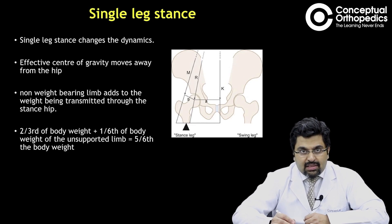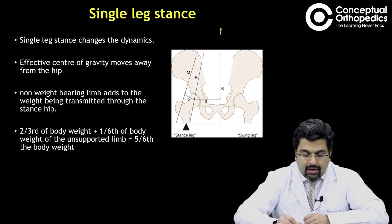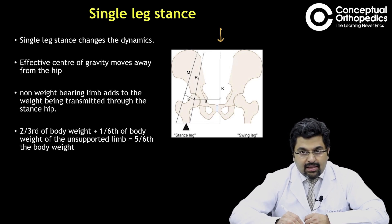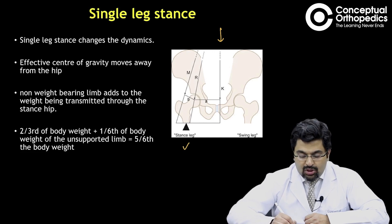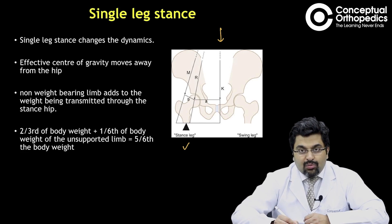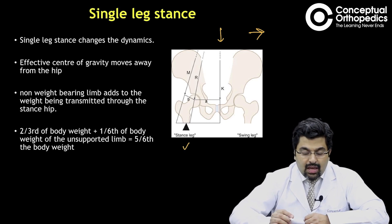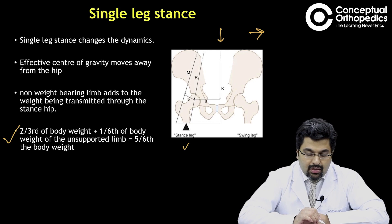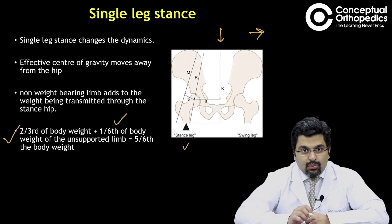When we go to a single leg stance, the dynamics change. The effective center of gravity moves away from the hip — it moves towards the swing leg and away from the stance leg. The non-weight bearing limb will also add to the weight transmission. The total weight transmitted through the stance leg will be two thirds plus one sixth of body weight, which equals five sixths of body weight.